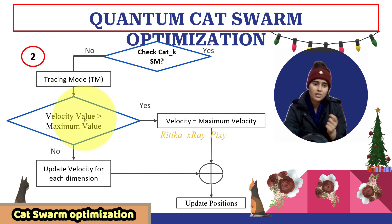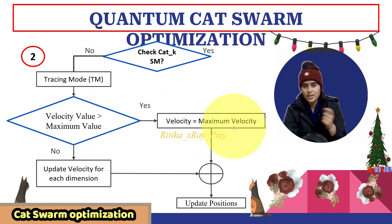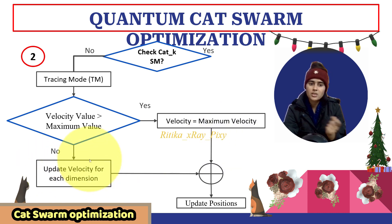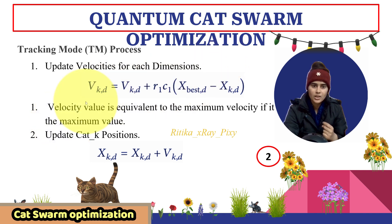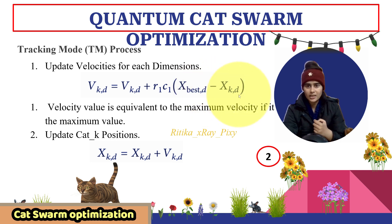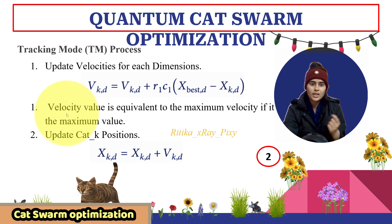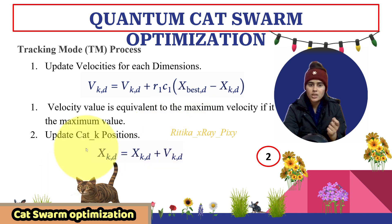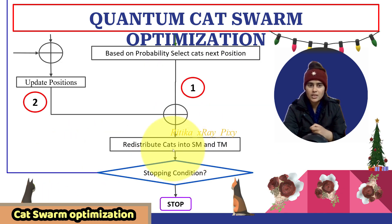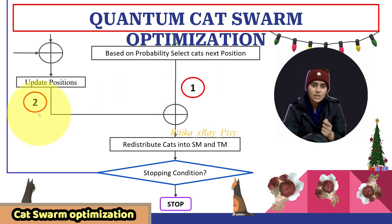Next we have tracing mode. For cats in tracing mode, we will check the velocity value — whether it is greater than the maximum value or not. If this condition is true, we will consider the velocity as the maximum velocity; else we will update the velocity for each dimension. Then we will combine and update the position. The velocity for each dimension is updated using a formula involving X_best, the best solution, and X_k_d, the cat position, where K is the cat number and D is the dimension.